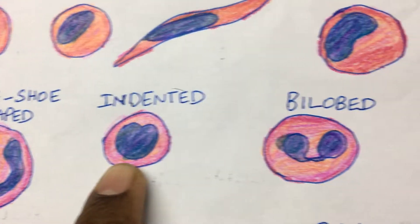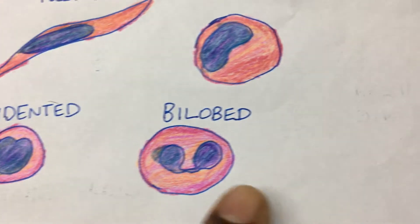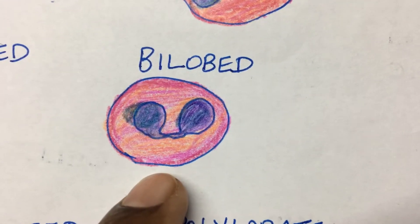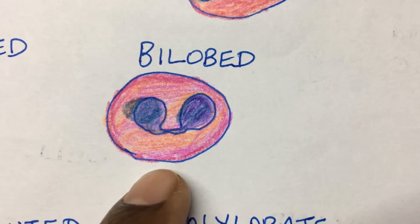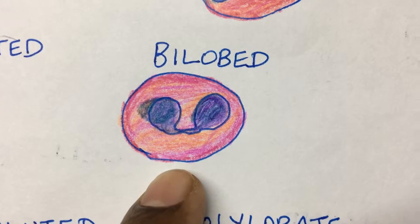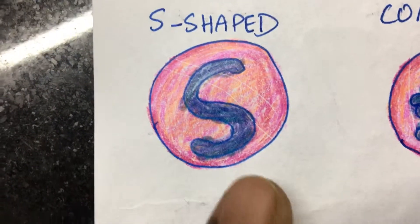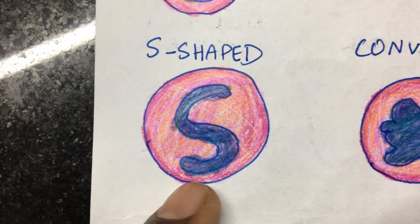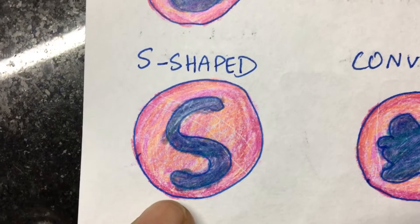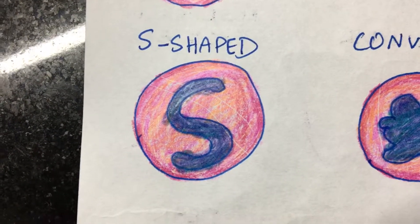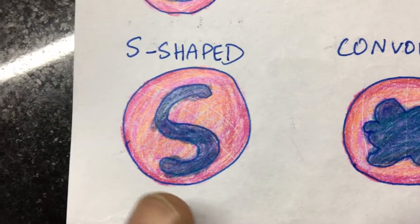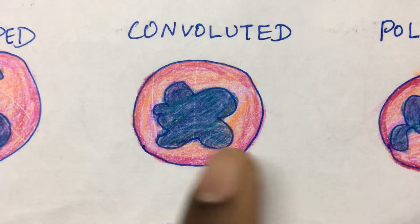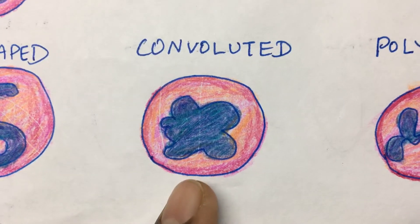Here you have the bilobed nucleus, which is commonly present in eosinophils. Here you have an S-shaped nucleus, and again it is a type of band neutrophil — they will have this shaped nucleus. Here you also have the convoluted nucleus.